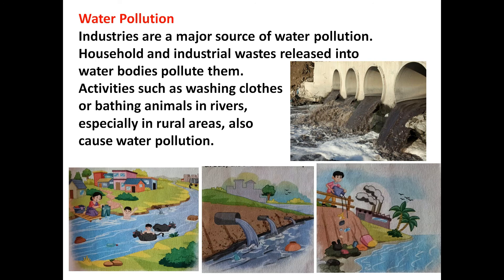The second type of pollution is water pollution. Water pollution also mainly comes from industry. Household activities — like washing utensils, washing clothes, bathing — the water that drains out goes into drains. Industry also releases waste water. This pollutes the water bodies. These drains later connect to water sources and pollute the rivers.